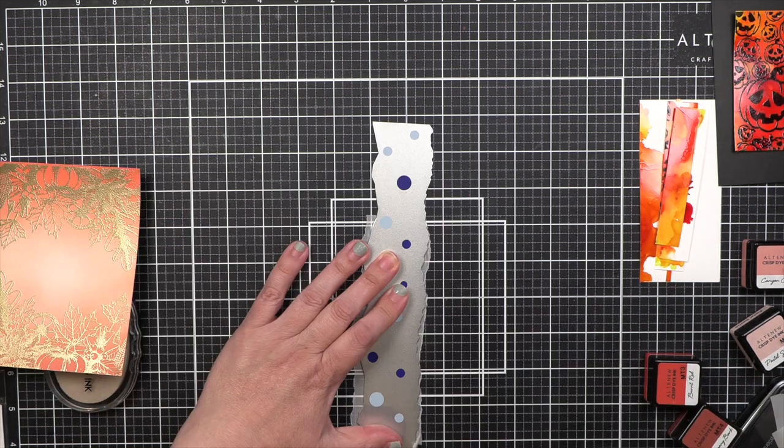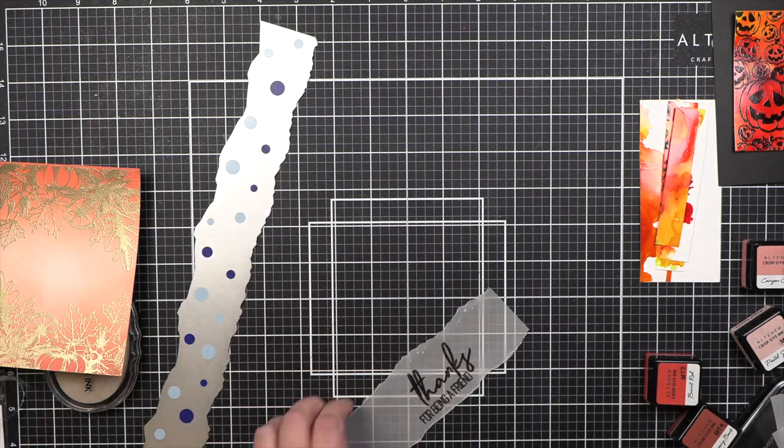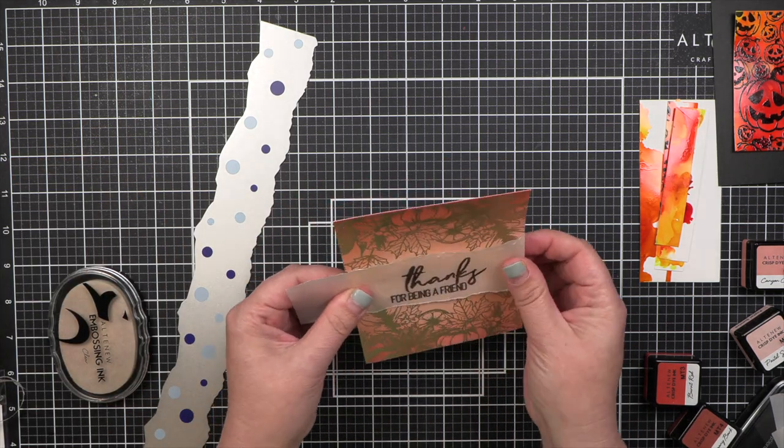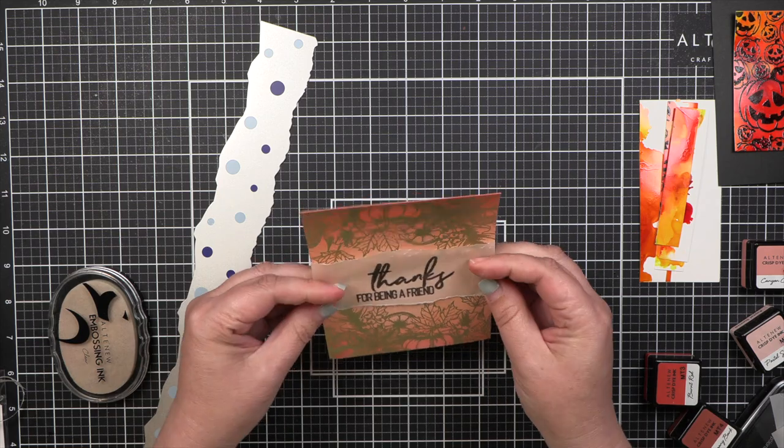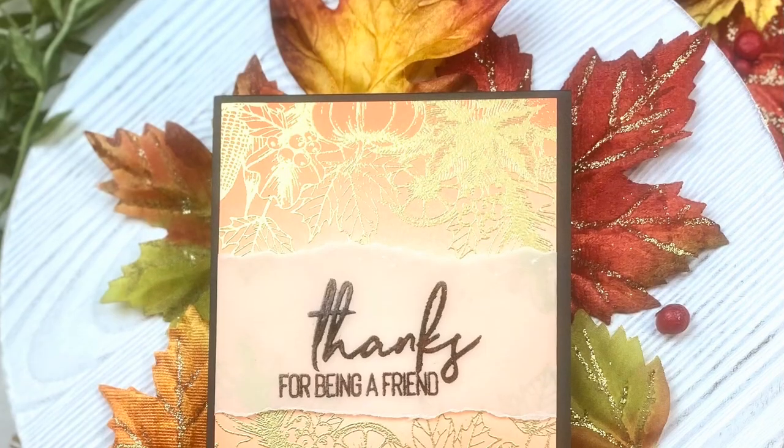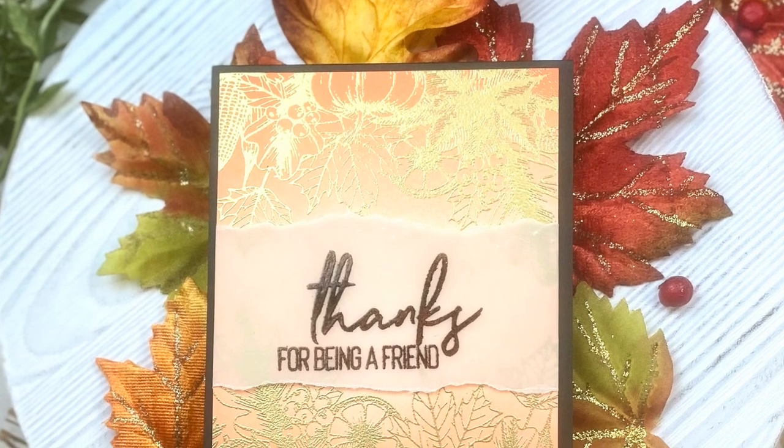And then I use a tearing tool in order to just tear off the edges to give it a little bit of an organic look, and I just wrap that around the side and put that on a black card base, and there is our finished project.